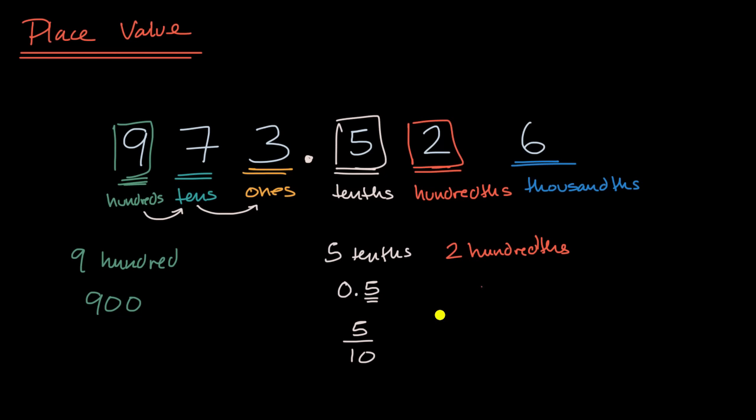Another way to write that, is you just write a two in the hundredths place. So we're going one, two spaces to the right of the decimal, or you could write it as two over a hundred, two-hundredths.